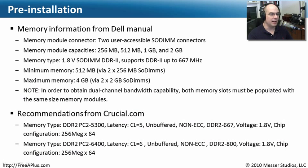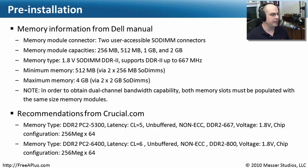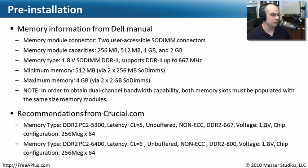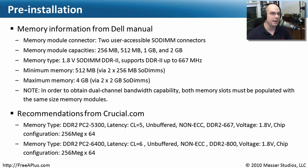Here's a really good example of this — and there's a lot of text on this slide for a good reason. Memory requirements need to be very specific and match perfectly. For my Dell laptop, the manual tells me it has two user-accessible connectors on the back. I can use 256 MB, 512 MB, 1 GB, or 2 GB modules. It specifies memory type, speeds, minimum and maximum memory, and even notes that using both memory slots enables dual-channel bandwidth — running twice as fast compared to a single memory module.